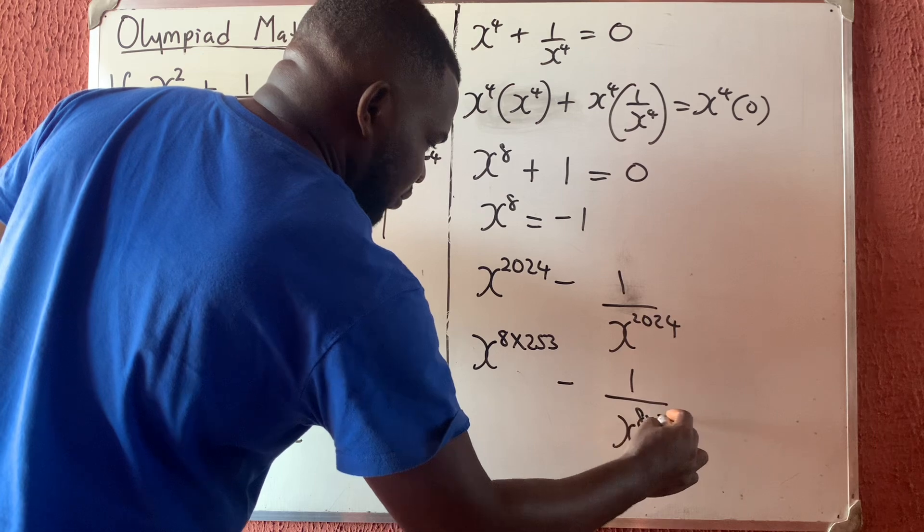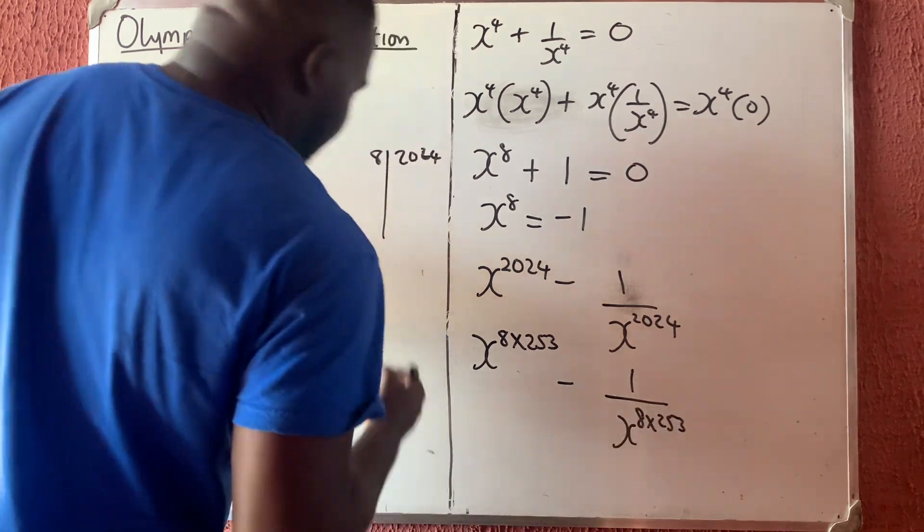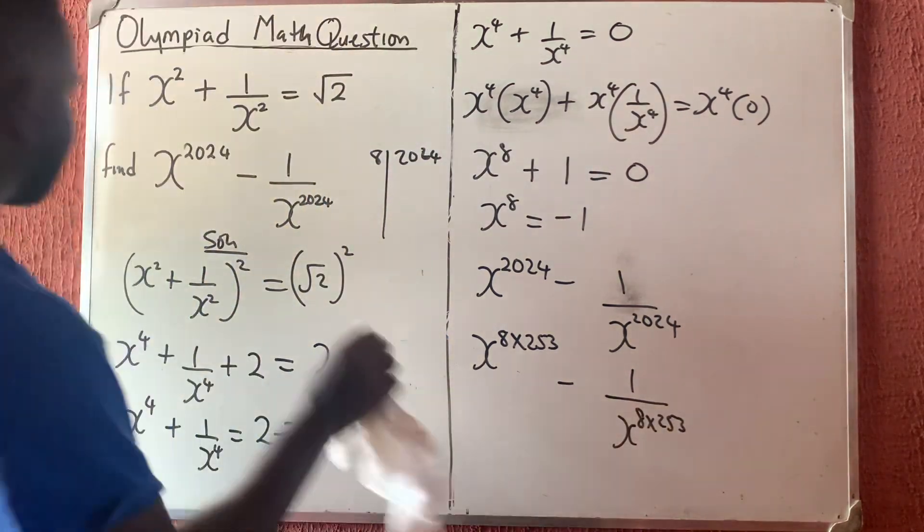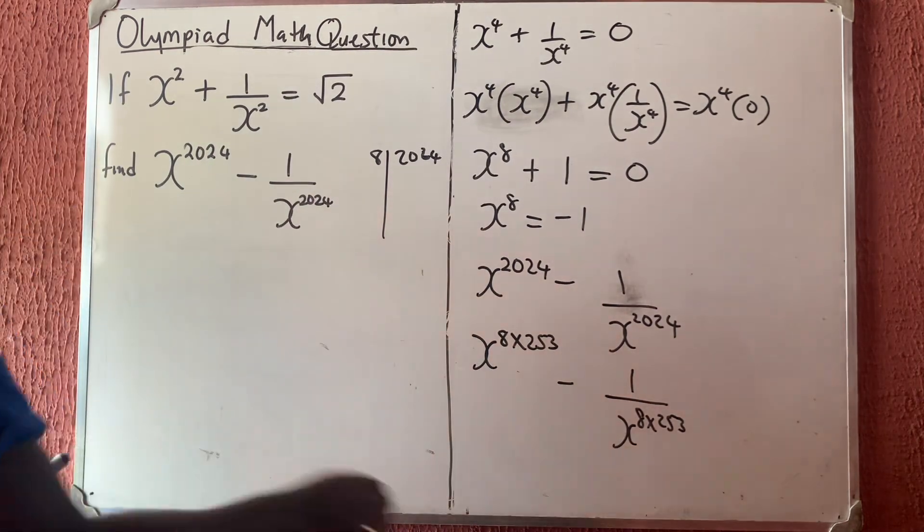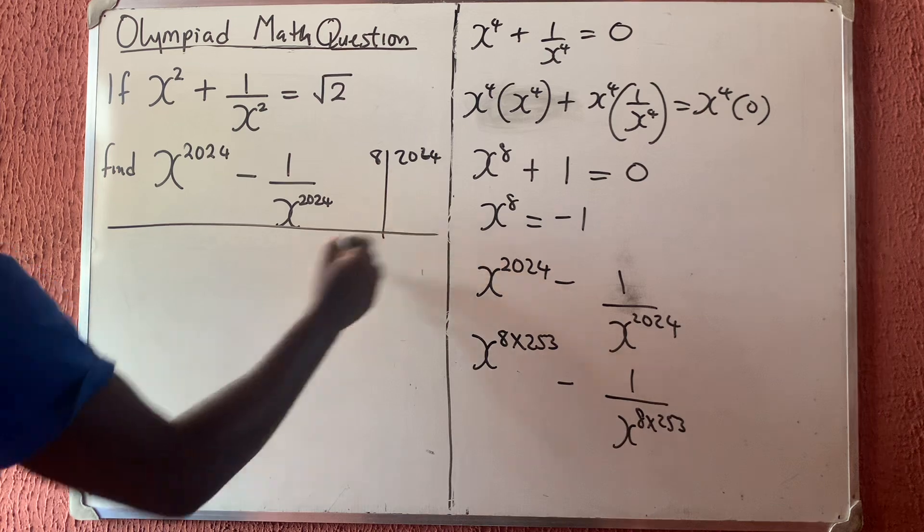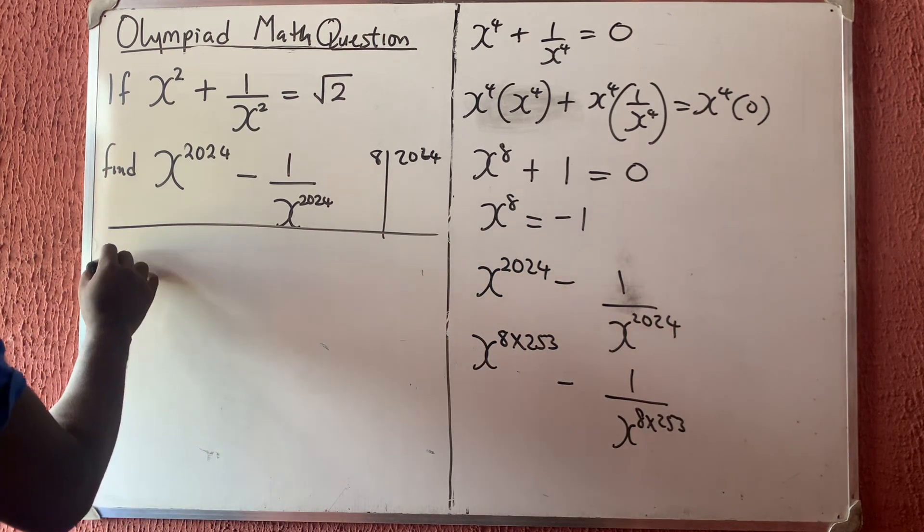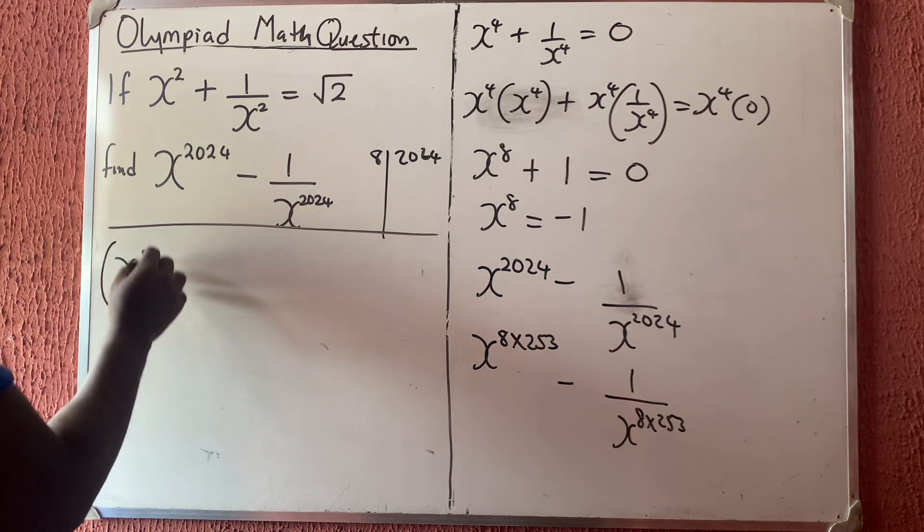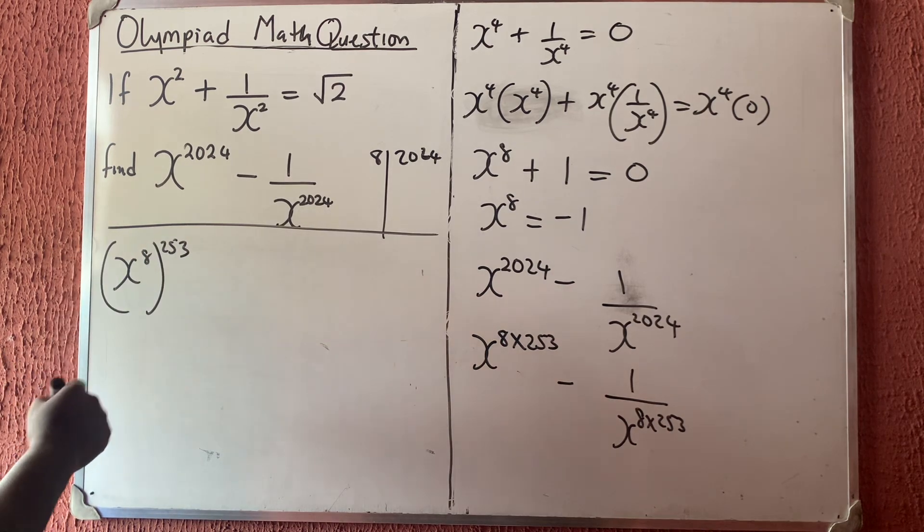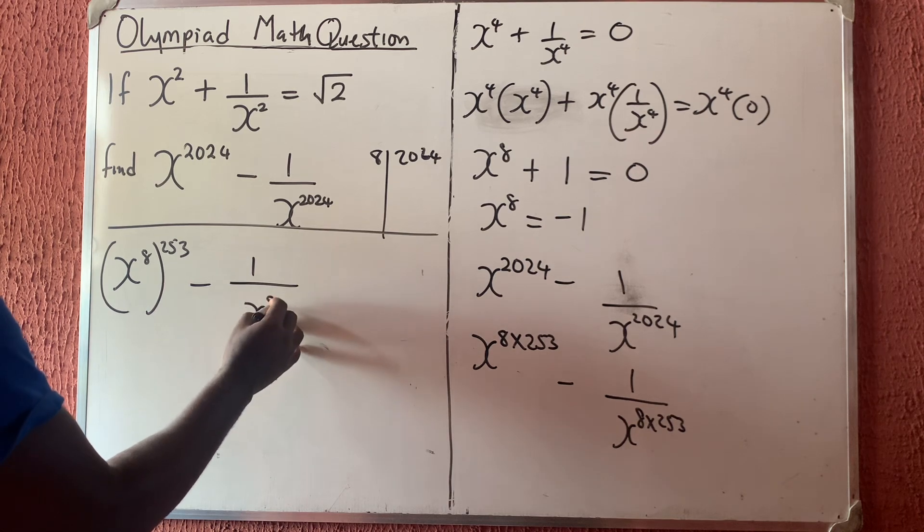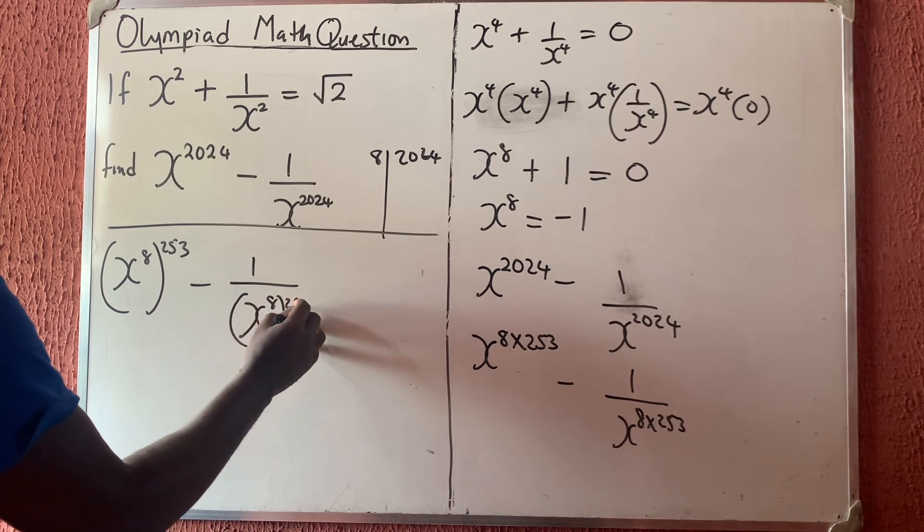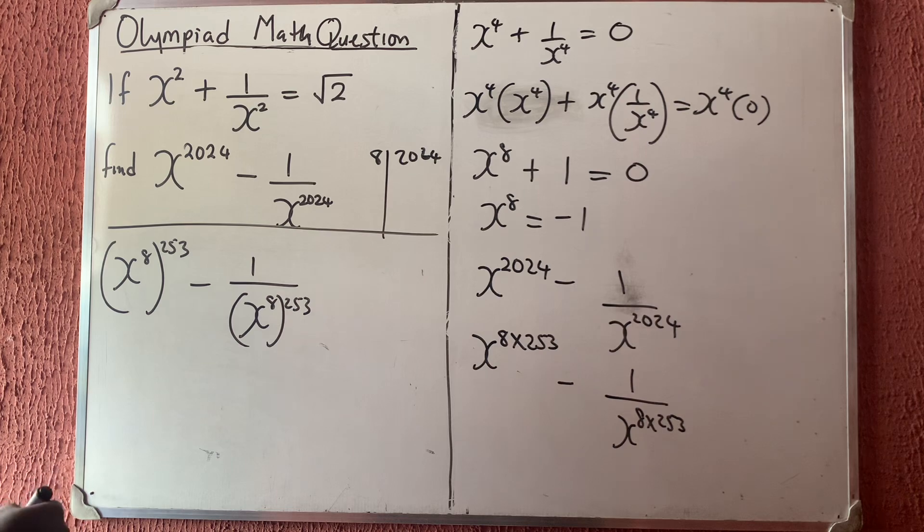So now let me continue from here. I'm going to be having that this is x raised to power 8 then bracket 253, according to indices, then minus 1 over the same thing again, x to the power 8 bracket 253.